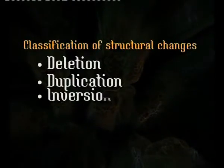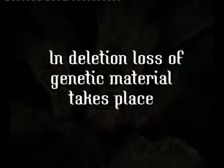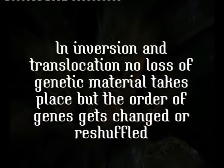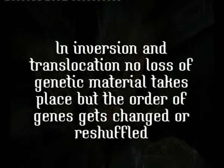In the case of deletion, there is a loss of genetic material from the main chromosome in which this change takes place. Whereas in the case of inversion and translocation, there is no loss of genetic material from the concerned cell; however, the order of the genes is changed — the genes are reshuffled.